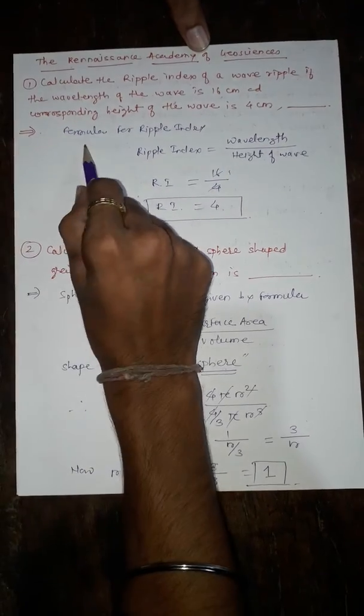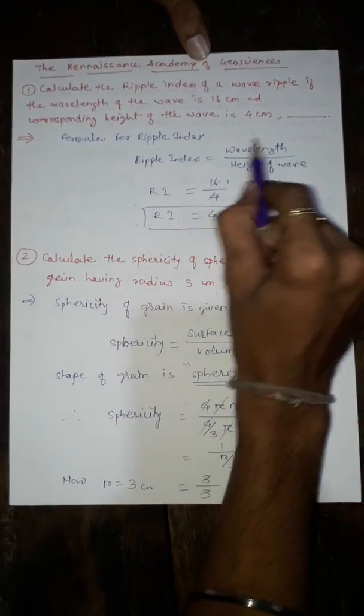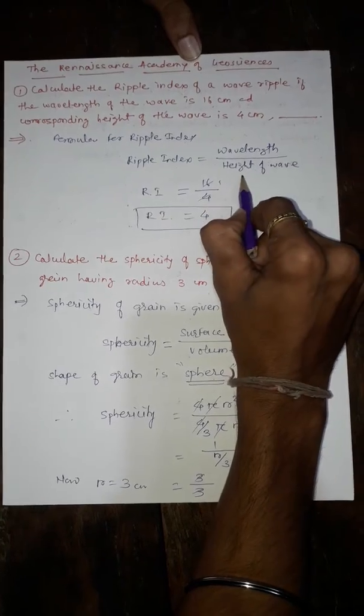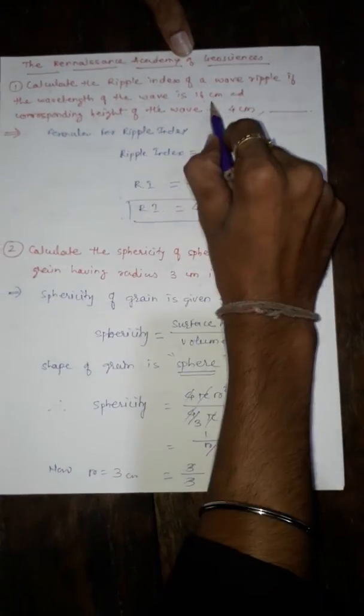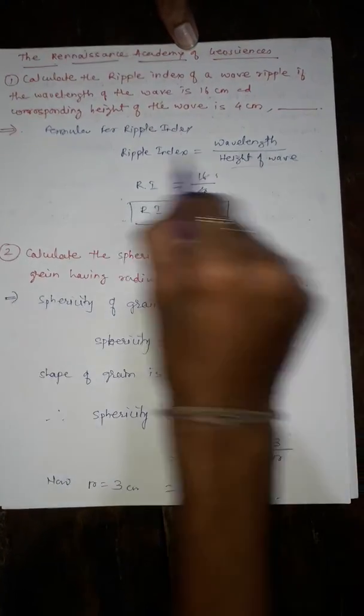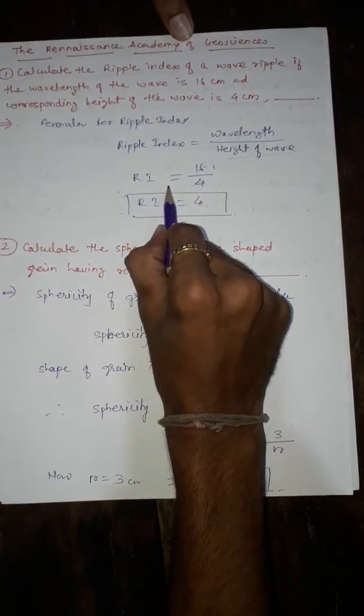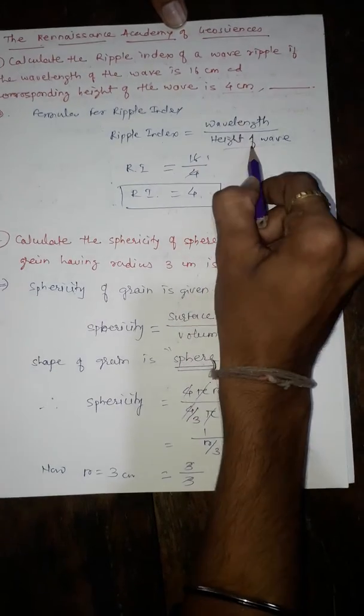Ripple index is the ratio of wavelength of the wave to the corresponding height of the wave. We have the value of wavelength given as 16 cm and height of the wave given as 4 cm. Ripple index is the ratio of wavelength upon height.